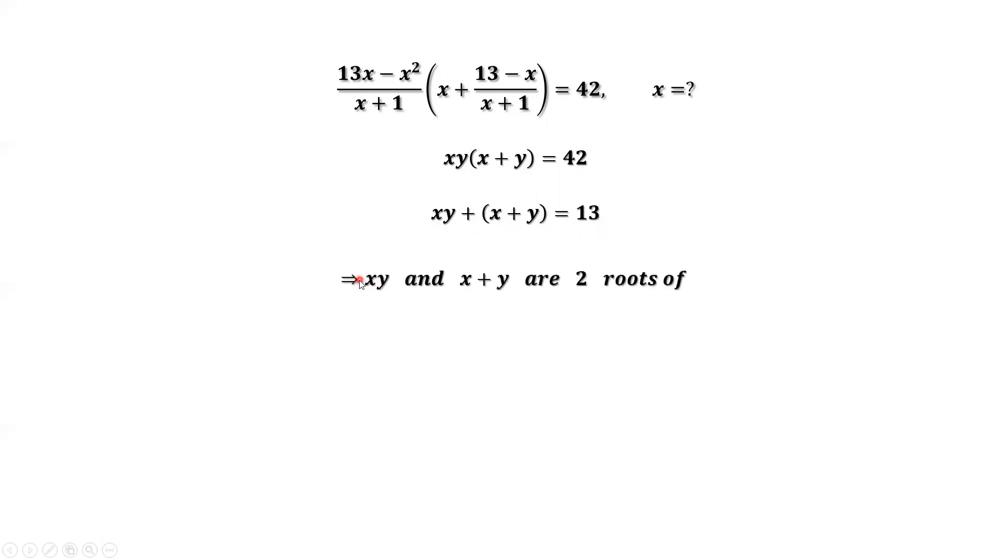This implies x times y and x plus y, the two numbers, are two roots of the following quadratic equation: t squared minus 13t plus 42 equals 0. Sum, you can see that's 13. Product, you can see that's 42.